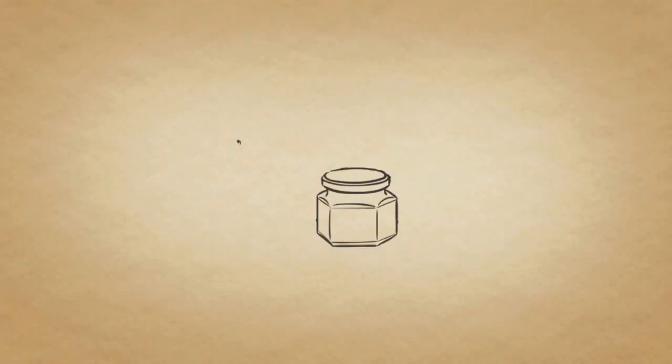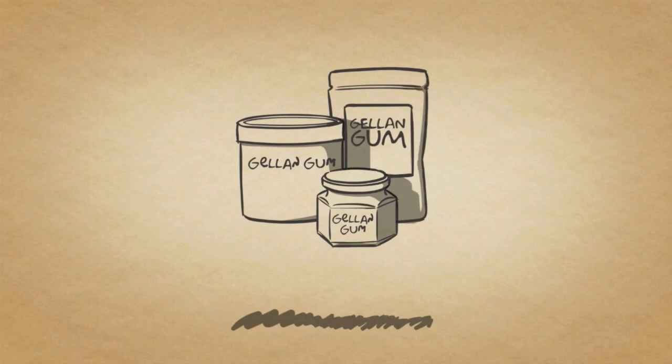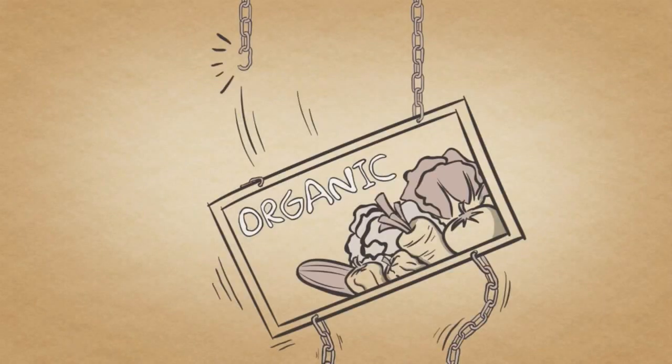Gellan gum, for instance, is one major synthetic carrageenan alternative that has been proven to cause some of the bad side effects folks often associate with food additives as a whole and is the most likely to disrupt the organic and all-natural supply chain.